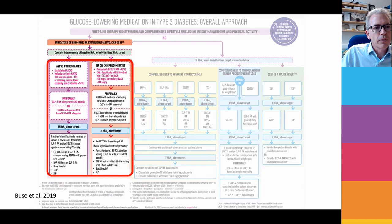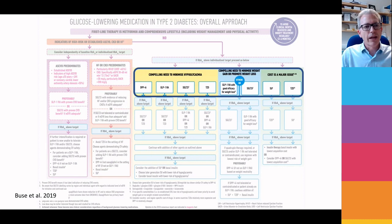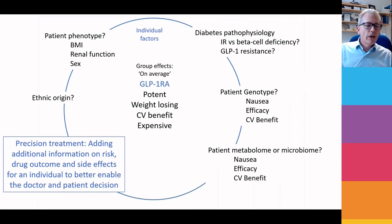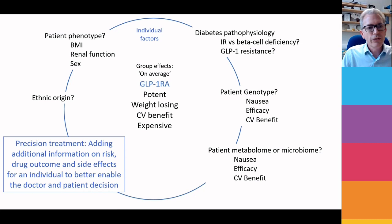There is now evidence that if people have got high risk for cardiovascular disease or renal disease, then they fall into this block on the left of the screen, which will guide people to using SGLT2 inhibitors or GLP-1 receptor agonists. But most people actually fall on this side — they don't have that increased risk — and that means we're left with a choice of six drugs. And how do we choose which to give? We know from randomized controlled trials that these look at the average effect. On average, GLP-1 receptor agonists, for example, are potent weight-losing drugs with cardiovascular benefit, but they're expensive.